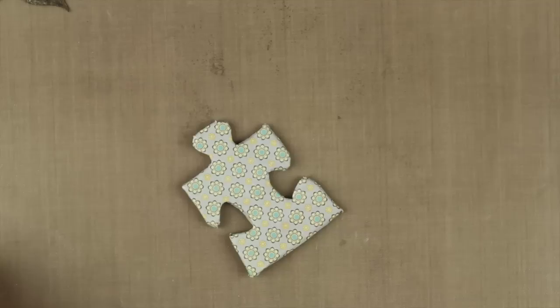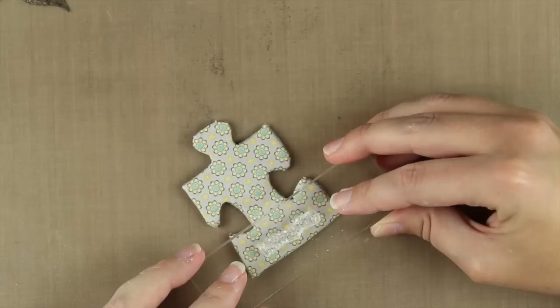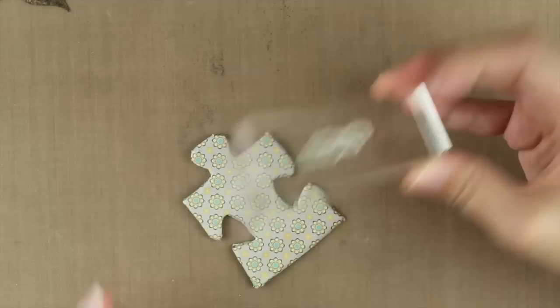To begin with we are going to stamp the Hello Spring and we are going to emboss that in black embossing powder. So this stamp is from the Flower Friend stamp set from Sanni's Stamp. So we are going to start with the Hello Spring.